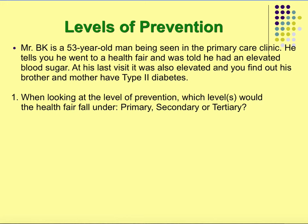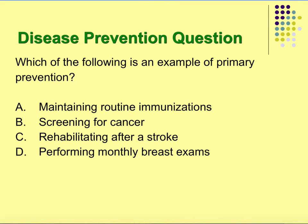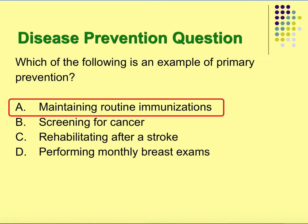Case study: Mr. BK is a 53-year-old man being seen in the primary care clinic. He tells you he went to a health fair and was told he had elevated blood glucose. At his last visit it was also elevated, and you find out his brother and mother have type 2 diabetes. Which level of prevention would the health fair fall under? He's getting screened, so the best answer would be secondary. Which of the following is an example of primary prevention? Options include maintaining routine immunizations, screening for cancer, rehabilitating after a stroke, and performing monthly breast exams. The best answer here would be immunizations, because you are altering your susceptibility.